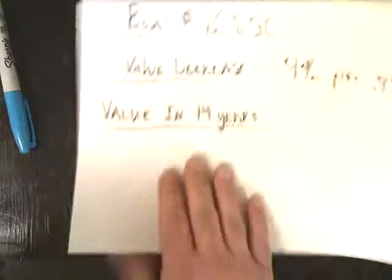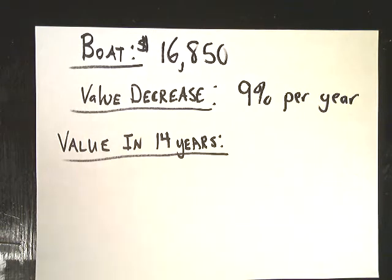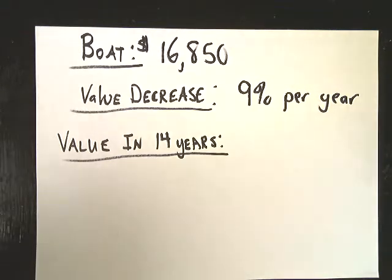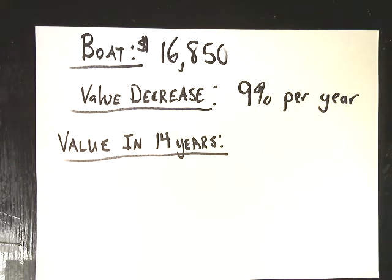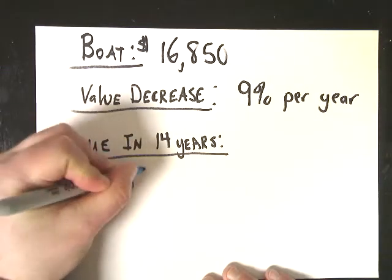Anything you buy, of course, goes down in value for the most part — anything non-jewelry related. A boat costs $16,850 and the value decreases by 9% per year. The joke about a boat is as soon as you drive it off the lot, it's worth half as much as you bought it for. We're going to look at the value of it in 14 years, losing 9% per year. So I set up my equation.